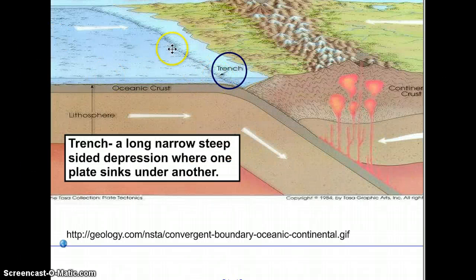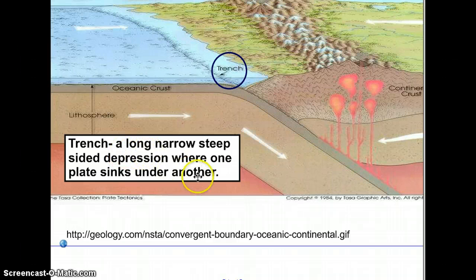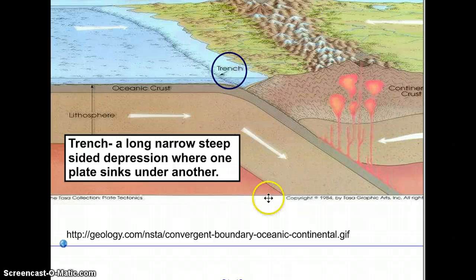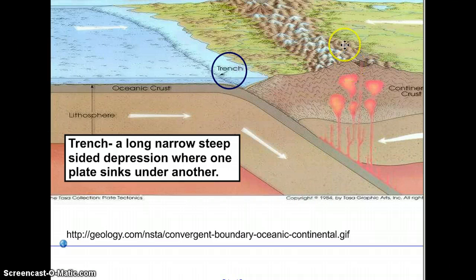A trench is formed at the subduction zone. A trench is a long, narrow, steep-sided depression where one plate sinks under another. Volcanoes are formed here at the edges.